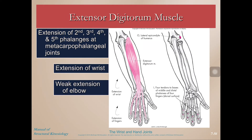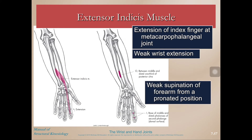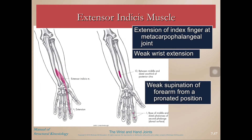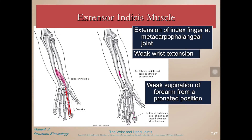Extensor digitorum is a finger extensor that extends your fingers, does elbow extension because it originates on the posterior aspect of the elbow, and wrist extension. Extensor indices is just the extensor of your pointer finger — every time you point at something, that's extensor indices. It can also contribute to weak supination, because if you imagine those fibers shortening while leading with that finger, it pulls you into supination.